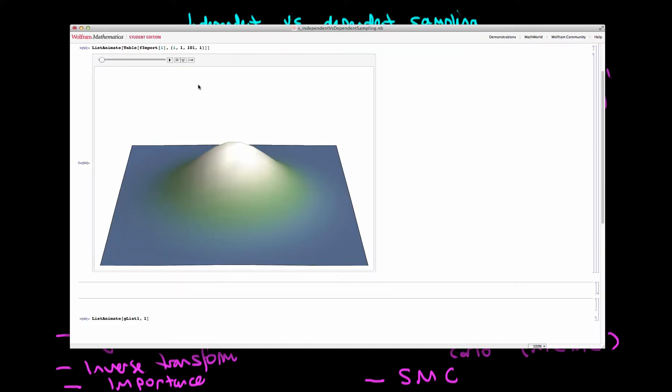To consolidate this point, I've created some simple animations in Mathematica. We can imagine independent samplers as being a parachute regiment. The way in which they would advance across territory would be to parachute in, and because each of these samples doesn't depend on the previous one, they're able to cover territory that much faster than with a dependent sampler.